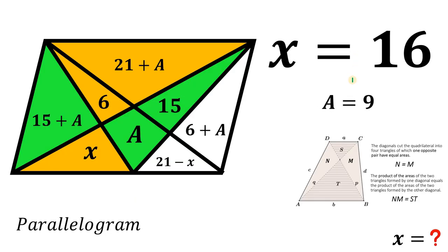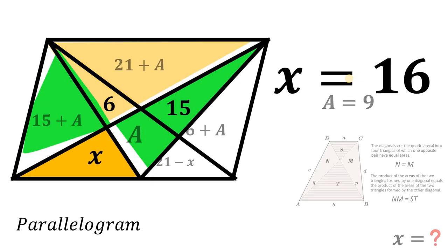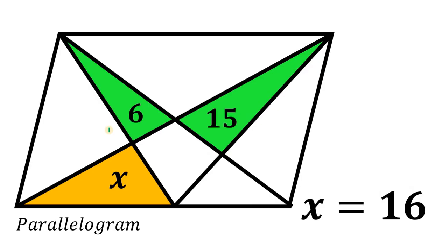Therefore, the exact value of x in our figure is 16 square units. Given this parallelogram, the area of the triangle represented as x is equivalent to 16 square units. And as always, we are done.